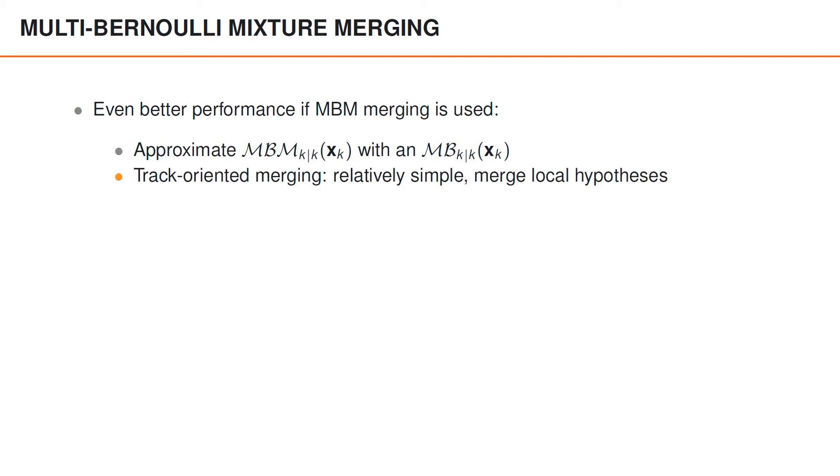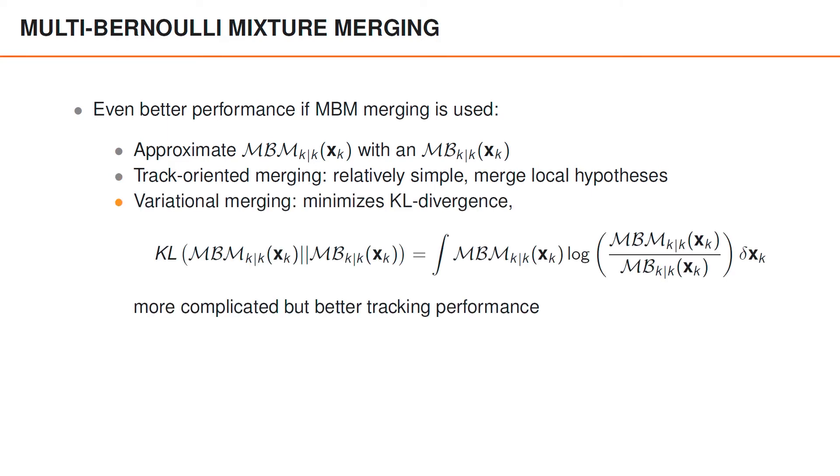One variant to do this is track oriented merging, which is relatively simple. Another way is to do variational merging, which minimizes the Kullback-Leibler divergence between the multi Bernoulli mixture and the multi Bernoulli approximation. This is a bit more complicated, but generally it gives a much better tracking performance. And the resulting tracking algorithms are often called PMB and MBM filters. However, unfortunately this is outside the scope of this course, but we encourage you to look into this if you're interested.